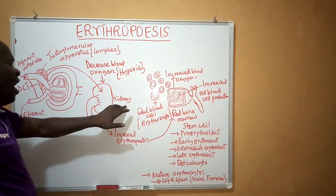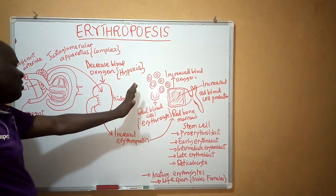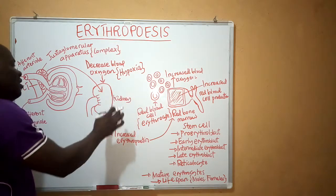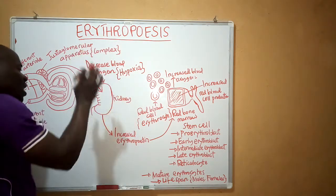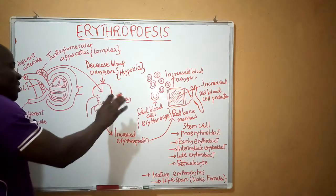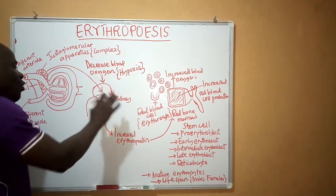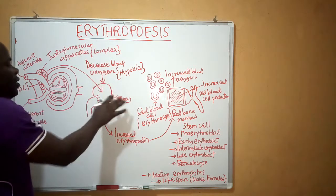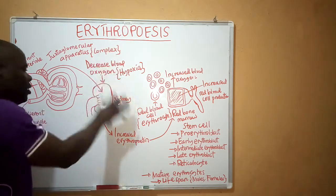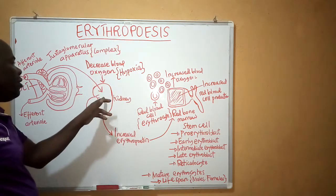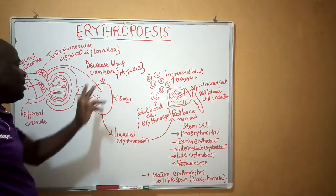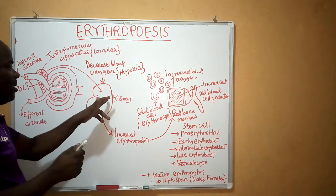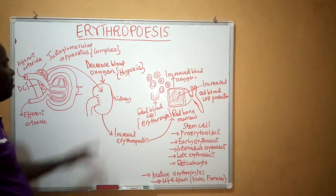The kidney requires a high amount of oxygen, as well as the liver and the heart, because within the kidney there are many metabolic processes that undergo aerobic respiration. Oxygen is highly required within the kidney, so any decrease in oxygen will be detected there.